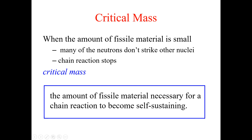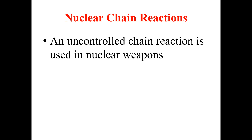So what do we need for sustaining a nuclear chain reaction? We need a particular mass of fissile material, which we call the critical mass. The critical mass is the amount of fissile material necessary for the chain reaction to become self-sustaining.